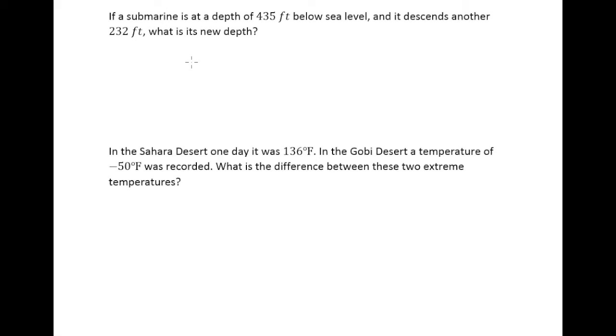435 feet below sea level is indicated by negative 435. The word descend means go down, or take away more, and so we're going to be taking away 232 more feet.